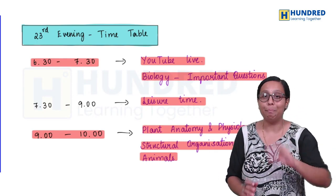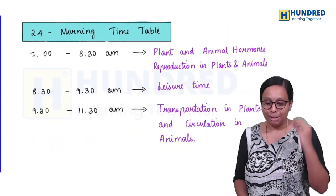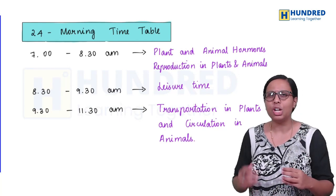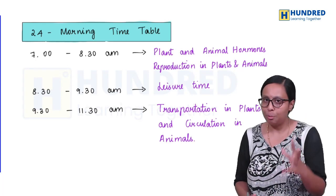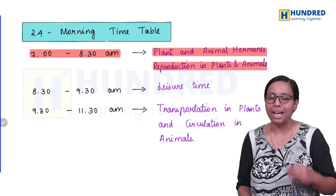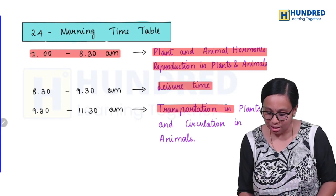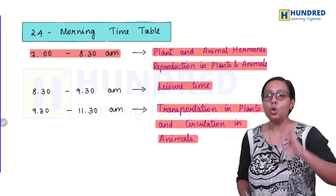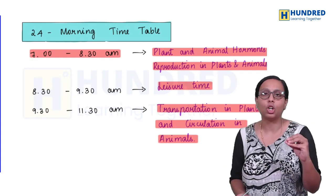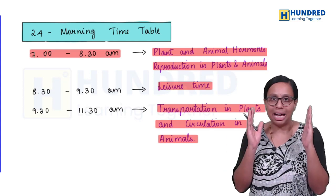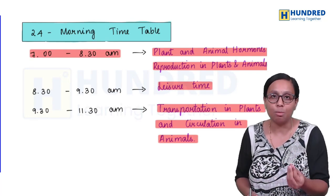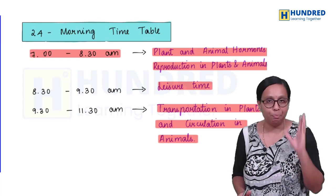This is about the plan on Saturday. We have finished with physics, chemistry, biology revision. Next day, Sunday, plant and animal hormones, reproduction in plants and animals. These are big chapters. Morning time we are more active. Sunday, wake up early. 7 to 8:30, you'll be covering these two chapters. Take a short break, have your breakfast, relax.